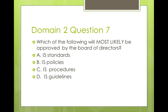Question seven: which of the following will most likely be approved by the board of directors? A) IS standards, B) IS policies, C) IS procedures, D) IS guidelines. A, C, and D are operational documents, so they can be approved at the departmental level. But policies and strategies are governance documentation, so they must be approved by the board of directors. The answer is B.